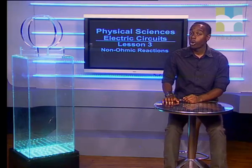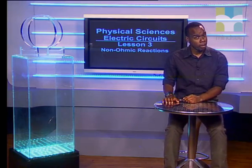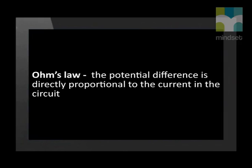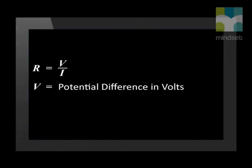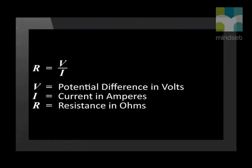Good day Grade 11s, welcome back to the next in the series on electric circuits. Do you remember Ohm's Law? Ohm's Law states that the potential difference is directly proportional to the current in the circuit. This relationship is expressed mathematically as R equals V divided by I, where V is the potential difference in volts, I is the current in amperes, and R is the resistance in ohms.